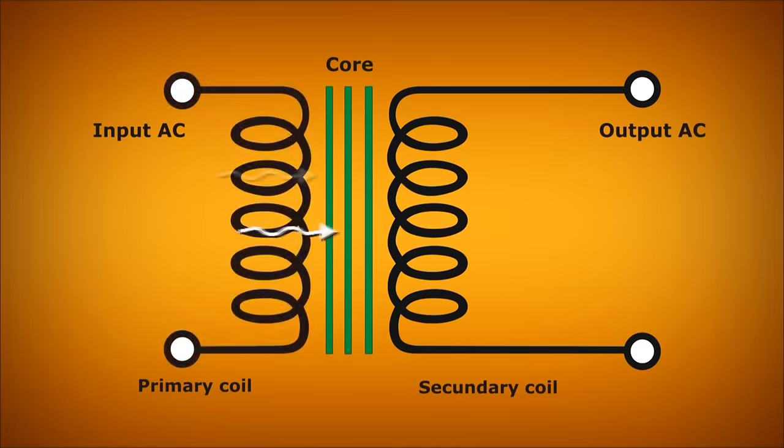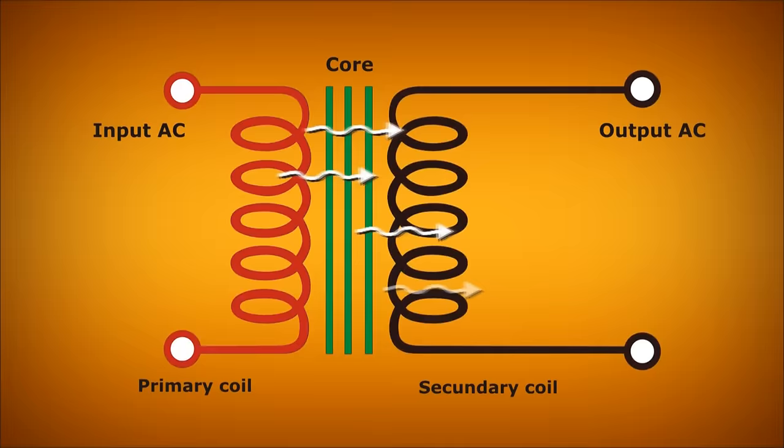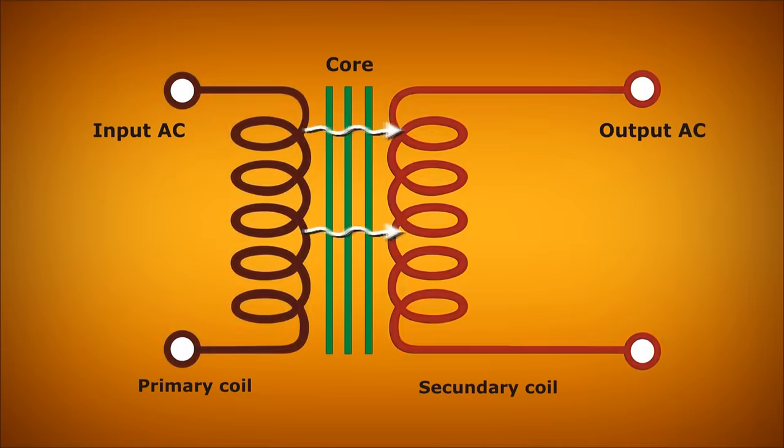The difference of turns of wire between the primary and the secondary coil creates a proportional difference between the input voltage and output voltage of the transformer.